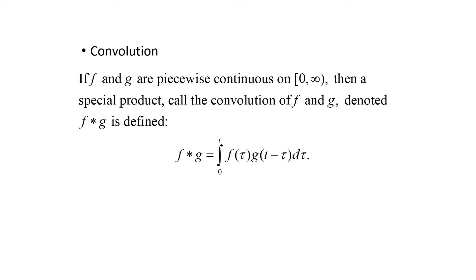By definition, if f and g are piecewise continuous on the interval from 0 to infinity, then a special product called the convolution of f and g, denoted f star g, is defined as follows. The convolution of f and g, f star g, is equal to the integral from 0 to t of f of tau times g of t minus tau with respect to tau.